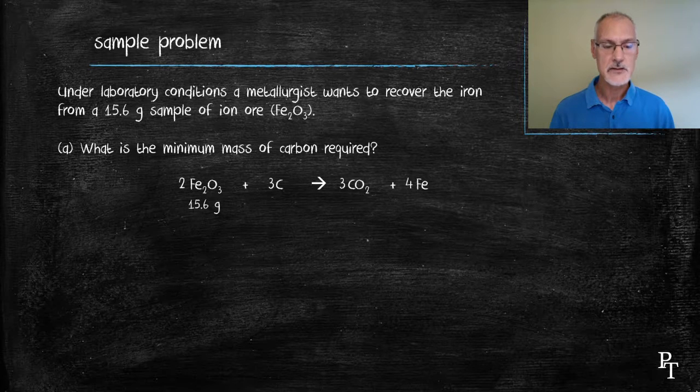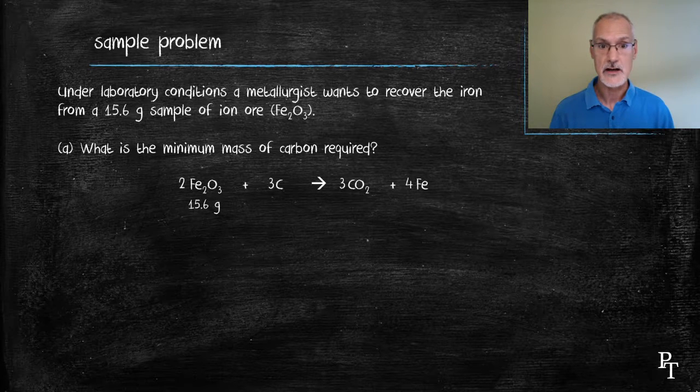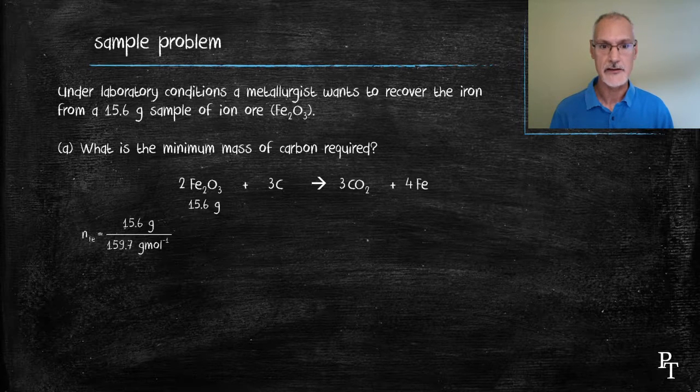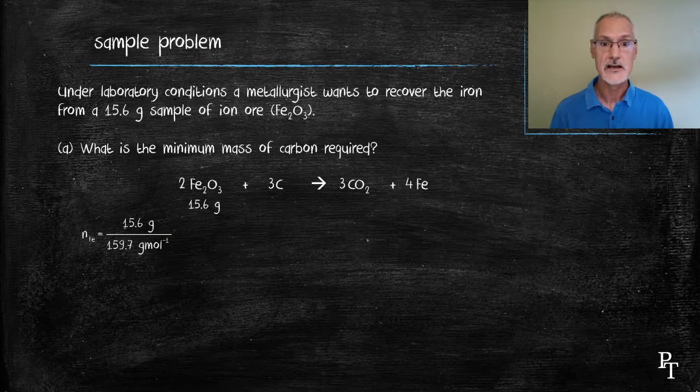I place the 15.6 grams of iron oxide underneath the iron oxide, and now I'm going to convert that into moles of iron oxide by dividing by the molar mass. An important thing to remember here is the molar mass is the mass of 1 mole of iron oxide, not 2. So you don't pay any attention to that 2 that's in front. That's taken care of in our next step. So the molar mass here, I have the 159, is for 1 mole of Fe2O3.